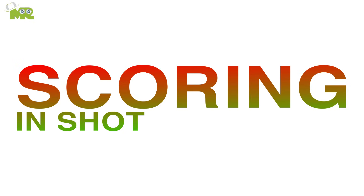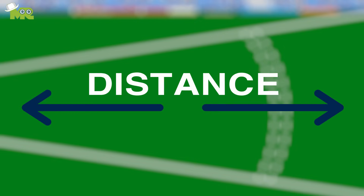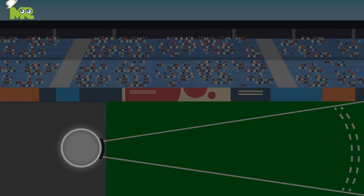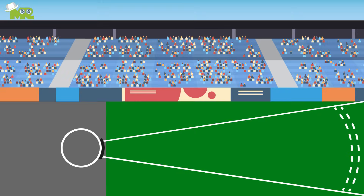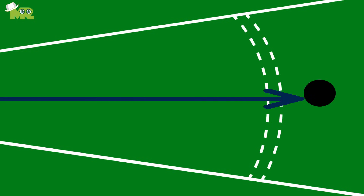Scoring in Shot Put Throw: The distance of the throw is measured from the circumference of the circle along a line to the nearest mark made by the fall of the shot.